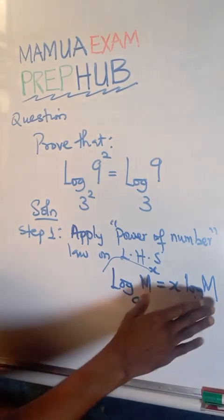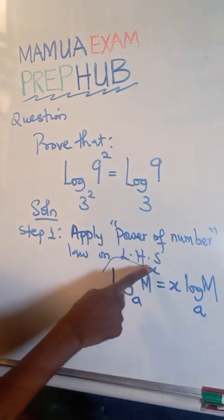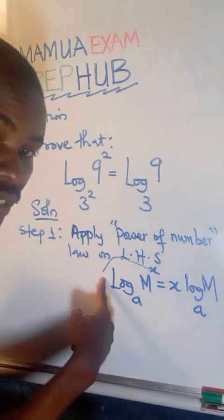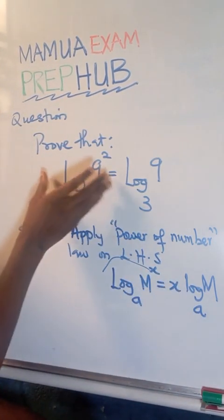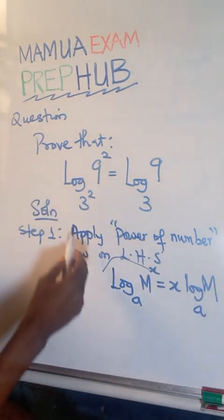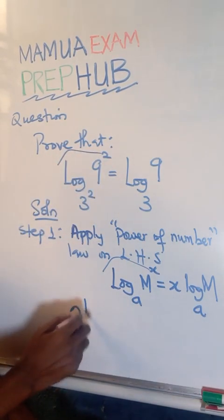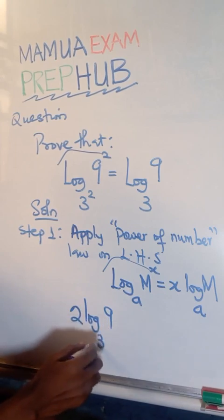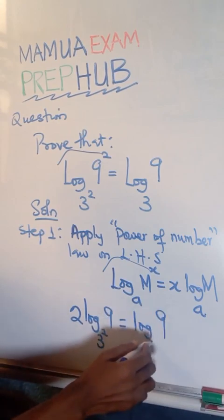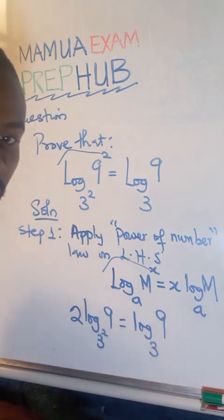So we are going to apply this law, which is the power of number. There is the power to this number n. We can bring it as a coefficient here. So we are going to apply this to this side. Now, if we do that quickly, we are going to get this is going to come here, so I have 2 log 9 base 2 is equal to log 9 base 3. So I have quickly applied the power of number law.